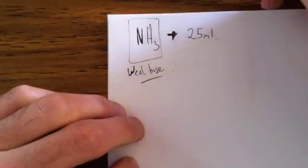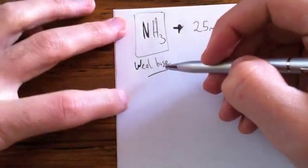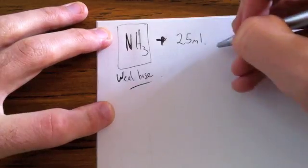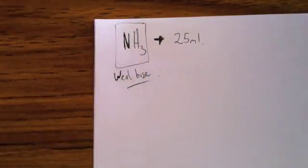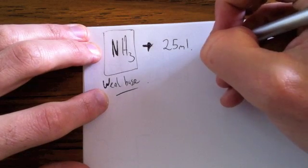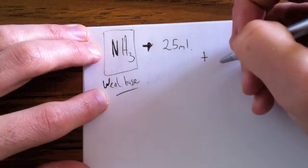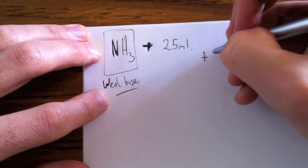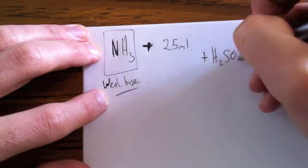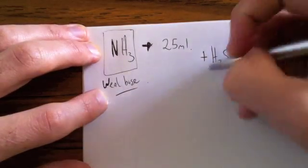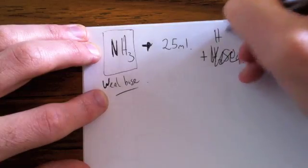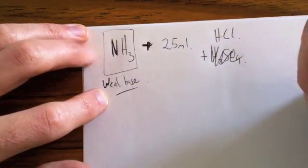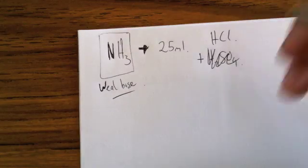Now, because it's a weak base, the first thing we need to do is react it with a strong acid. You can choose any strong acid. I'm going to use, what am I going to use? H2SO4. No, I'm not. It's too hard to work with. Hydrochloric acid. We're going to use hydrochloric acid because it's a simple way of doing it.